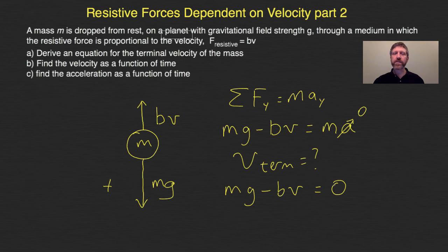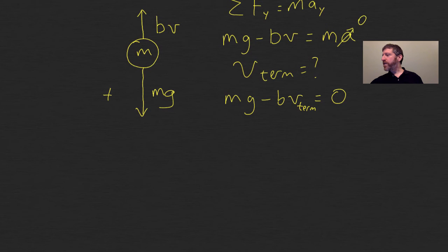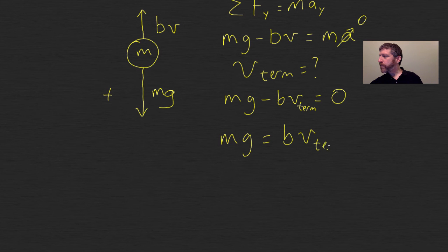So all we've got to do here is solve for v. So this will be v term right here. I'm just going to write v terminal because that is what we call the velocity when it's no longer accelerating. So let's just go ahead and solve for v term. I just get mg equals b times v term. And that means that mg over b equals v terminal. There it is. We have solved for the terminal velocity.